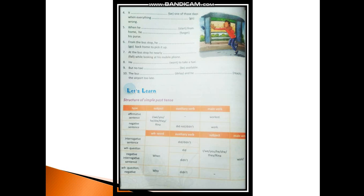Now talking about the structure of simple past tense. For affirmative sentences: subject plus main verb — 'I worked,' 'you worked,' and so on. For negative sentences: 'I did not work,' 'he did not work,' and so on. For interrogative sentences: 'When did I work?' 'When did you work?' and so on. For negative interrogative: 'When didn't I work?' 'When didn't you work?' 'Who didn't work?' and so on. That is the structure.